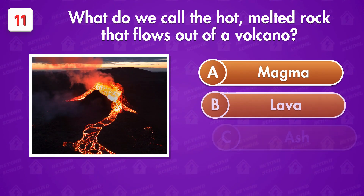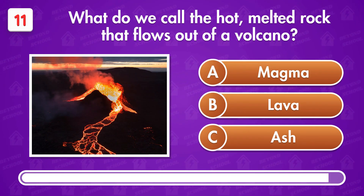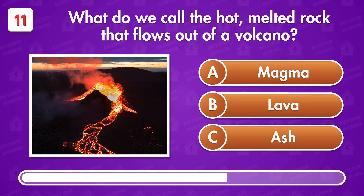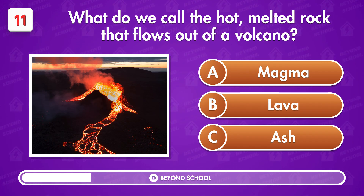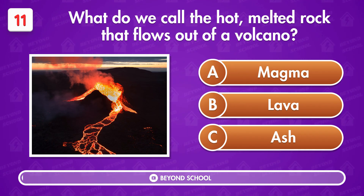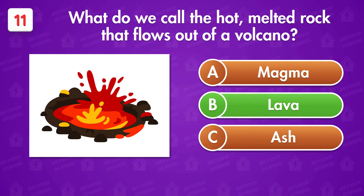What do we call the hot, melted rock that flows out of a volcano? Option B — Lava.